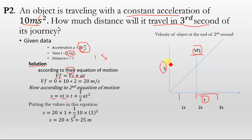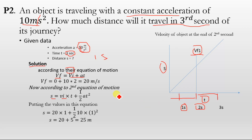First, we will calculate the vf velocity at the end of the second second using equation 1: vf equals vi plus at. Putting the values: vi is 0 because the object starts motion from rest, a is 10 meters per second squared, and time t is 2 seconds, because the duration for this first phase of motion is 2 seconds. Putting the values: vf equals 0 plus 10 multiplied by 2, which equals 20 meters per second.